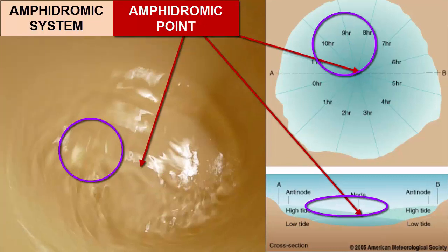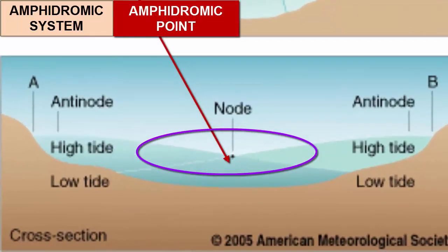This cross-section through the amphidromic system points out what the sloshing looks like from the side at two moments in time. One, where one side has water sloshing up, high tide, and the other water sloshing away, low tide, and then the opposite. Notice that the tidal range increases as we move away from the amphidromic point.